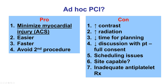The key advantage of ad hoc PCI is that it minimizes myocardial injury, which is why culprit lesions in acute coronary syndrome should be done early. It is also easier, faster, and avoids a second procedure — overall more convenient for the patient, minimizing repeat procedures and the need for obtaining second arterial access, getting another catheter, and all the related procedural steps.